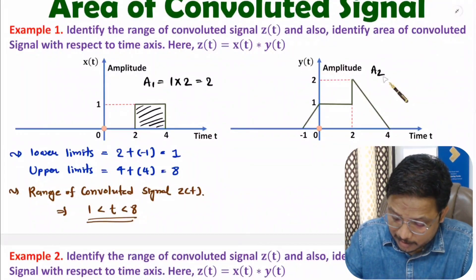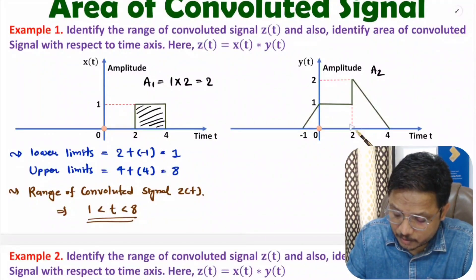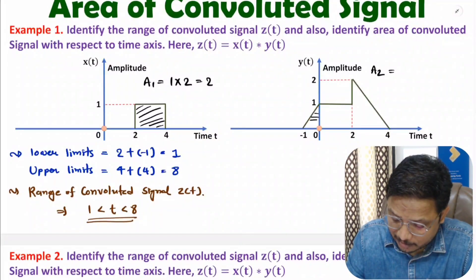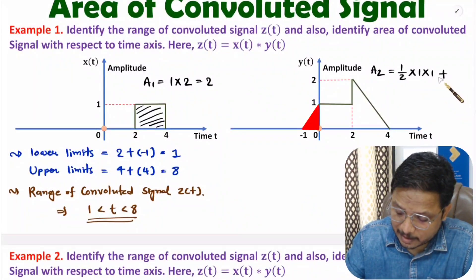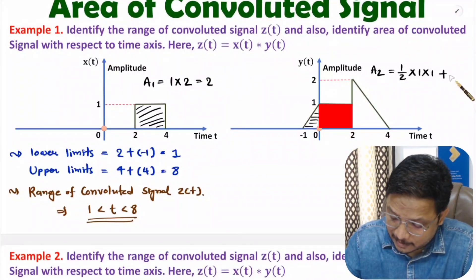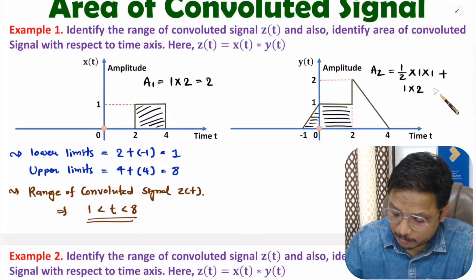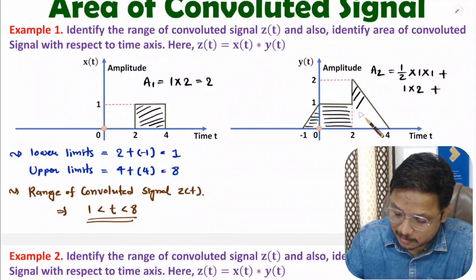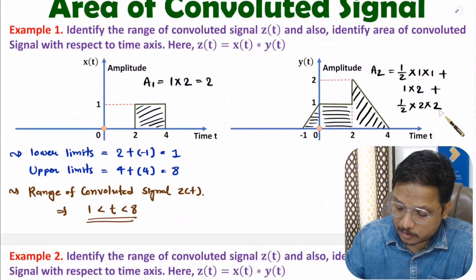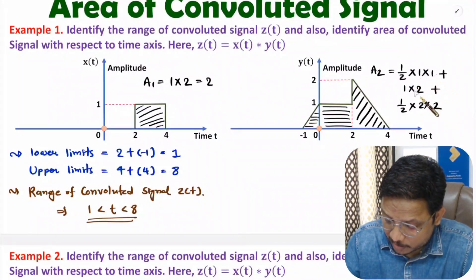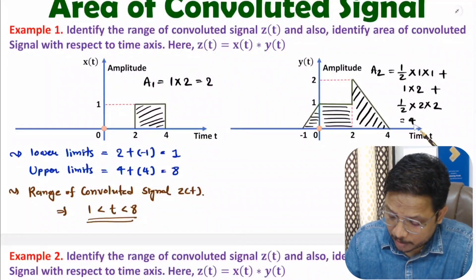To calculate area A2, covered by Y(t), this area is divided into 3 regions. The first region is a triangle: half of height times base, so half of 1 times 1. Plus the area of a rectangle: height times base, which is 1 times 2. Plus the area of another triangle: half of height times base, where height is 2 and base is 4 minus 2, which is 2. So total area A2 is one-half plus 2 plus 2, which equals 4.5.